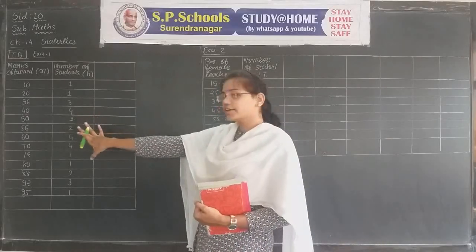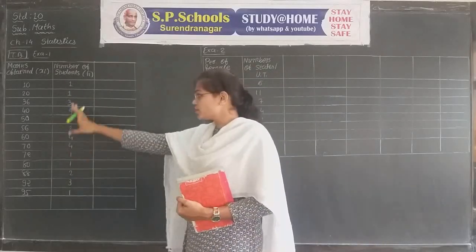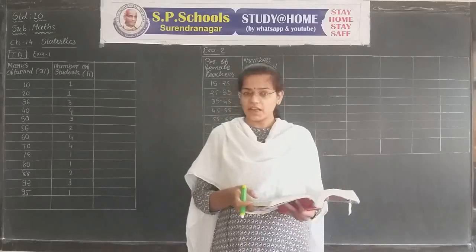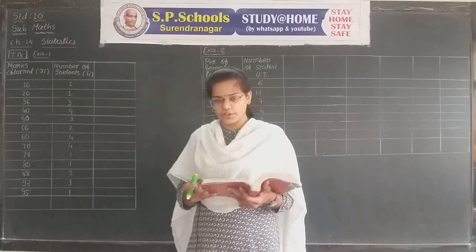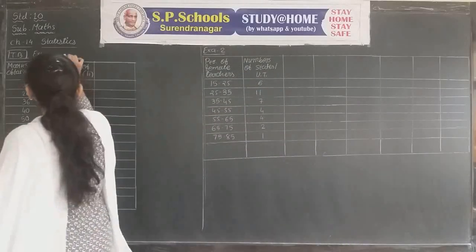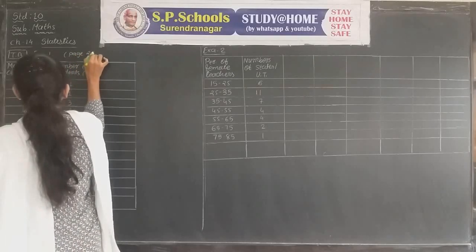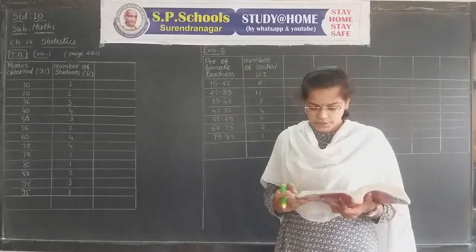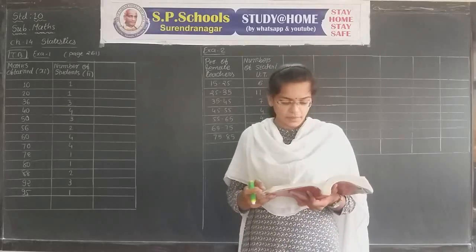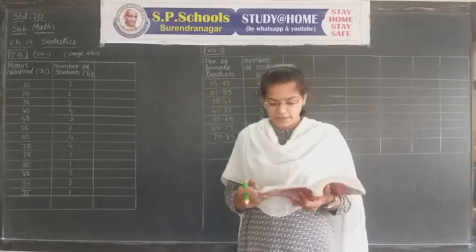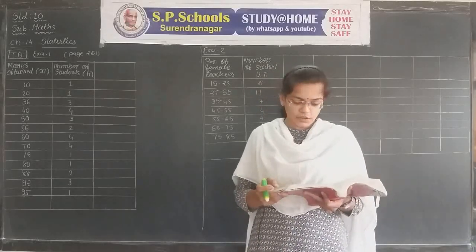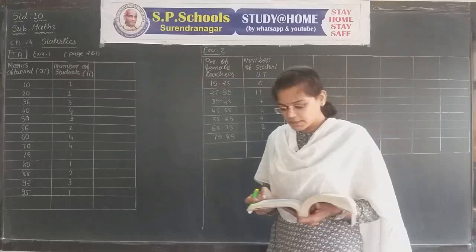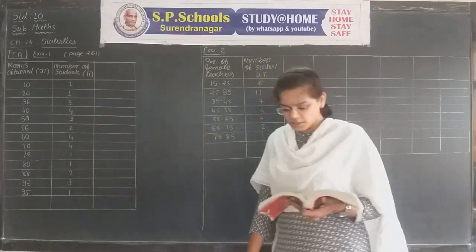Example one is from our textbook. It is an example for ungrouped data - whenever the observations and respective frequencies are given. Open your textbook to page number 261. The question: the marks obtained by 30 students of class 10 of a certain school in a mathematics paper consisting of 100 marks are presented in the table below. Find the mean of the marks obtained by the students.